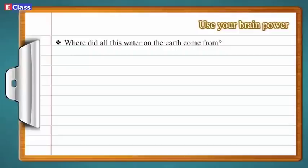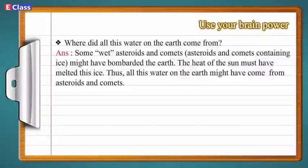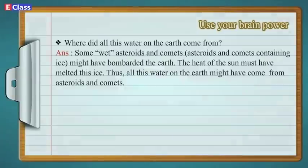Use your brain power. Where did all this water on the earth come from? Some wet asteroids and comets — asteroids and comets containing ice — might have bombarded the earth. The heat of the sun must have melted this ice. Thus, all this water on the earth might have come from asteroids and comets.